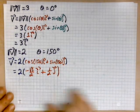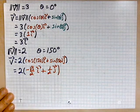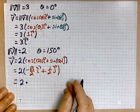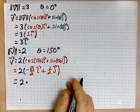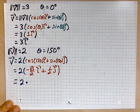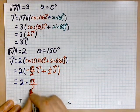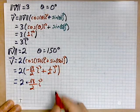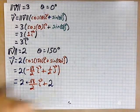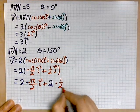So, the next step, you distribute the 2 into the vector. So, you have 2 times negative 3 over 2 i, plus the 2 times 1 over 2 j.